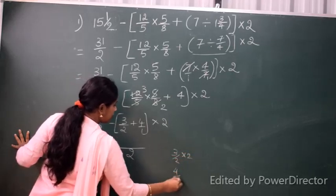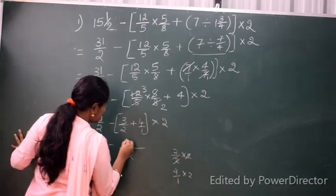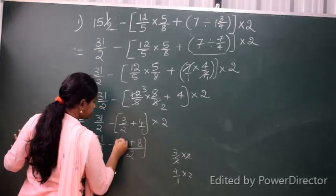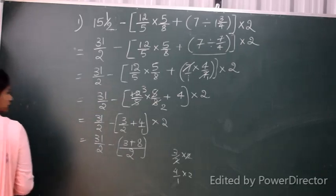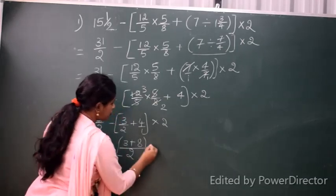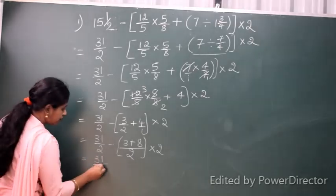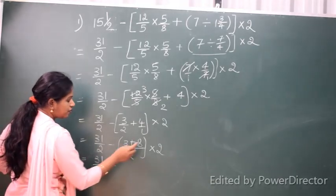Four times 2 equals 8. The 2s cancel again. And 12/5 × 5/8 gives us 3/2, so we have 31/2 minus [3/2 + 8].